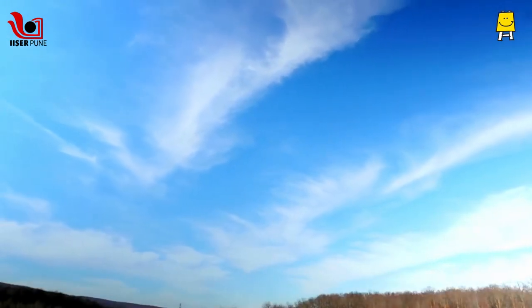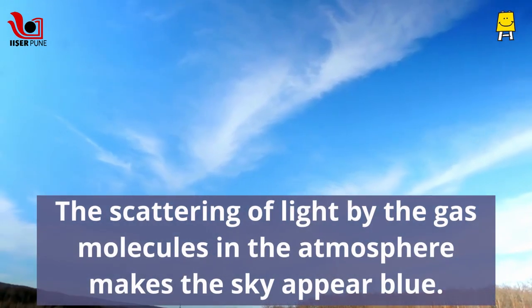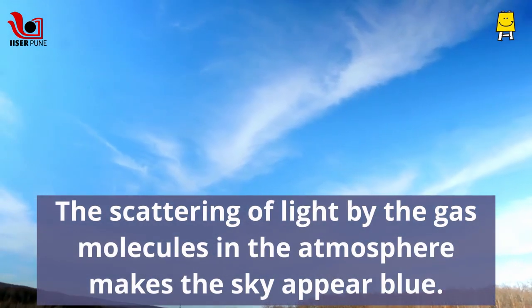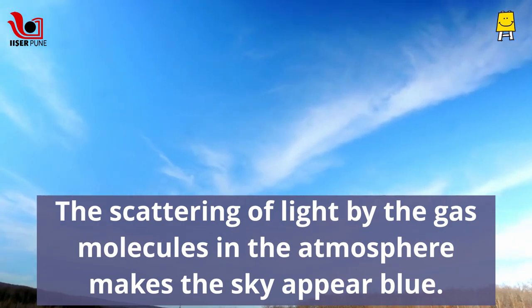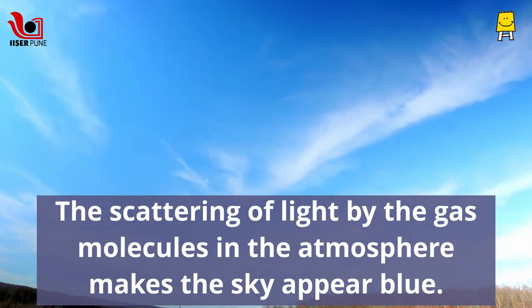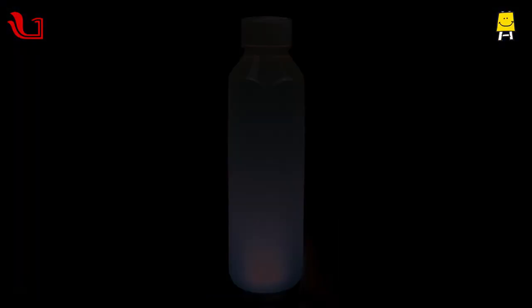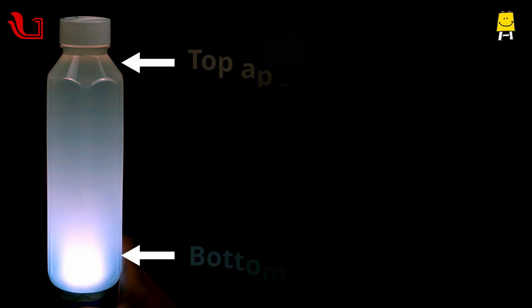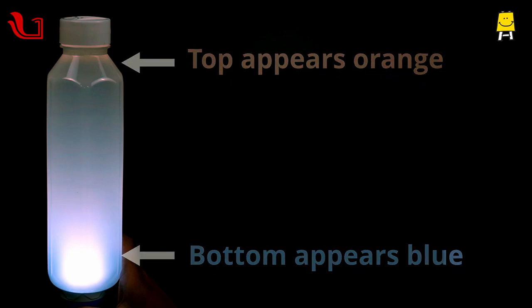In the earlier video, we saw that the scattering of light by the gas molecules in the atmosphere makes the sky appear blue. Scattering of torchlight also made a beautiful color gradient in the bottle of Tittal water. Let's find out how.